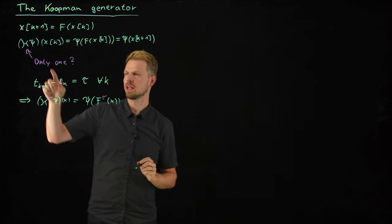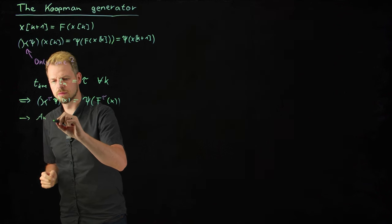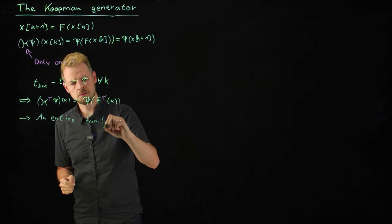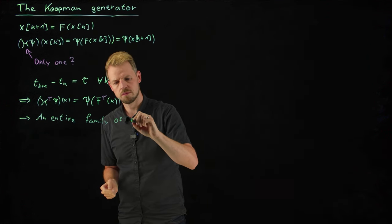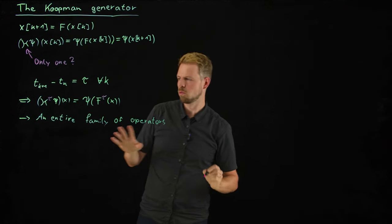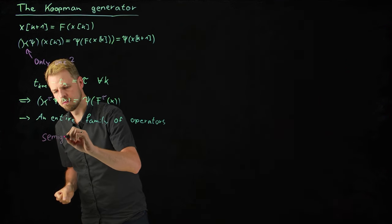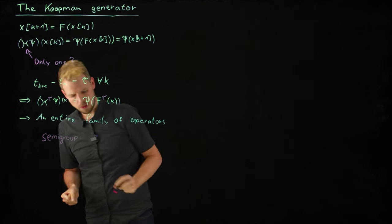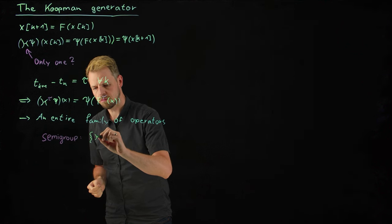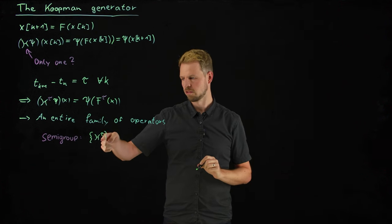So what we do have is not only one, but we have an entire family of operators, or in mathematical terms, what this is known as is a semigroup of operators. What the semigroup property means is that we have a set of operators, infinitely many in fact for each tau, with an associativity relation.